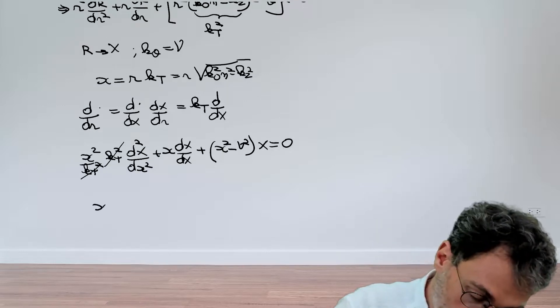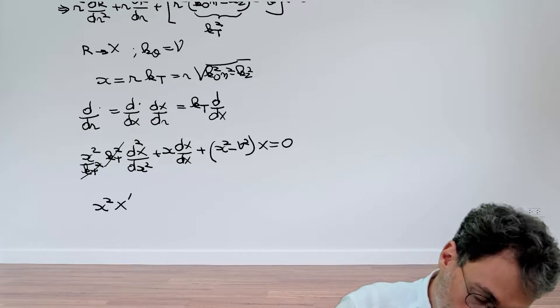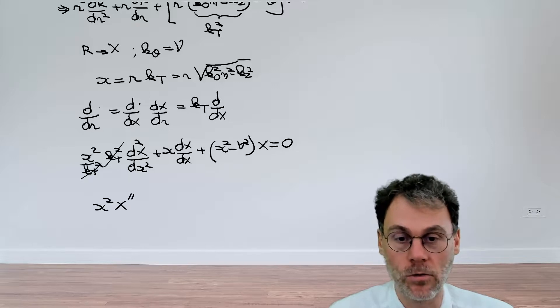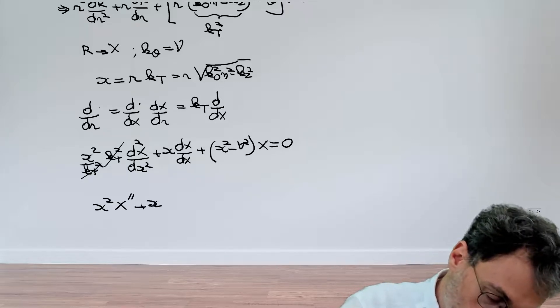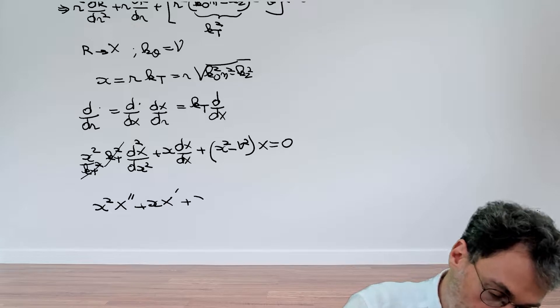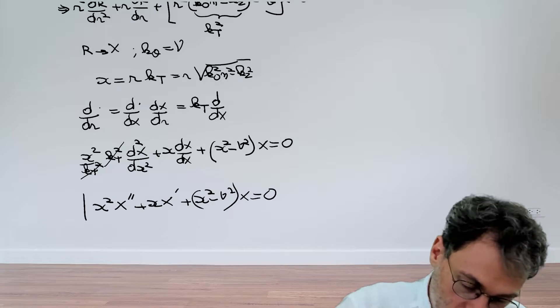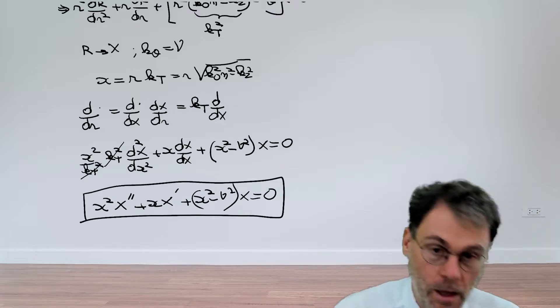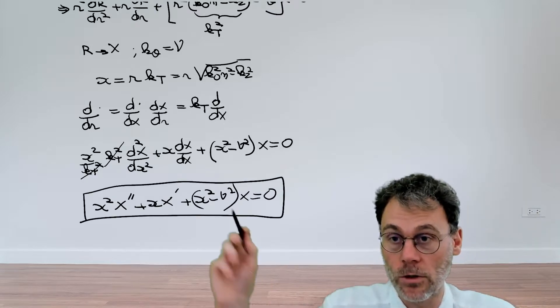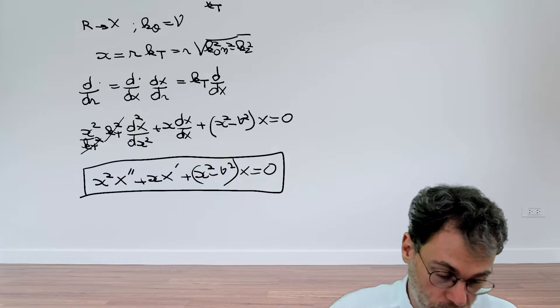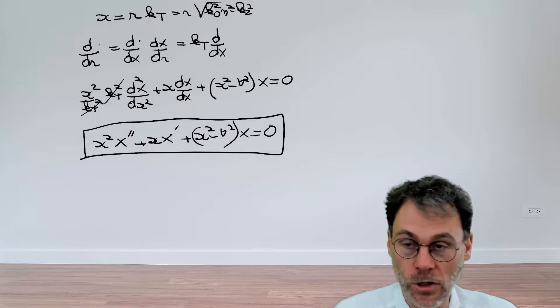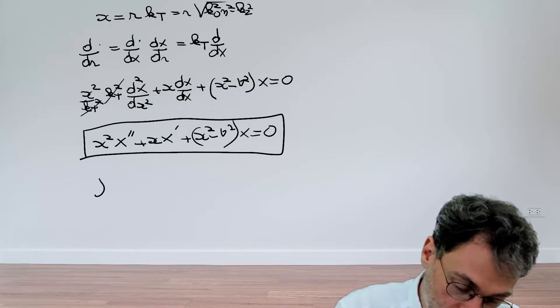If I finally rewrite this a little bit and also use, for example, primes to denote derivation here, then we have the following differential equation. There we have it. This is Bessel's differential equation. You might wonder what are the solutions to this differential equation. Well, they're not normal functions that you know. They're special functions.